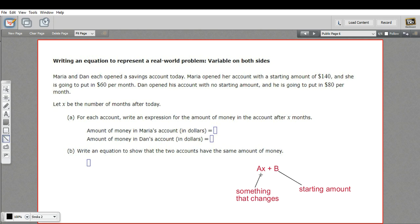And then the thing multiplied by the variable, this chunk represents something that changes usually over time, so every week or every month. In this case, every month, Maria is going to be putting in $60. So we would say X is the number of months, and we'll multiply it by $60. That's going to represent how much she's added.